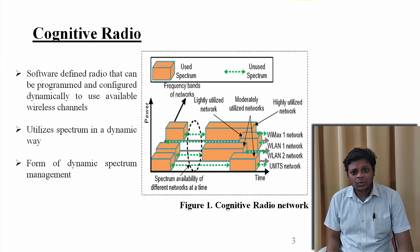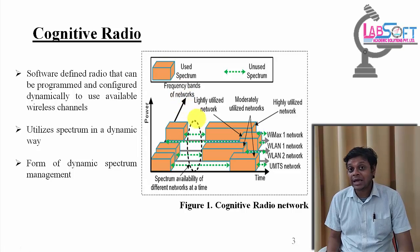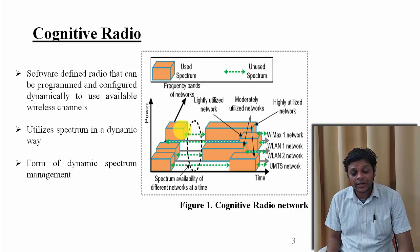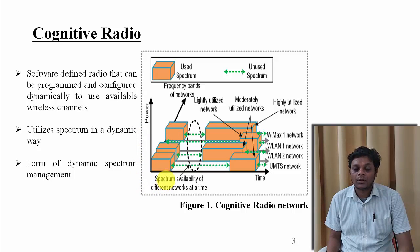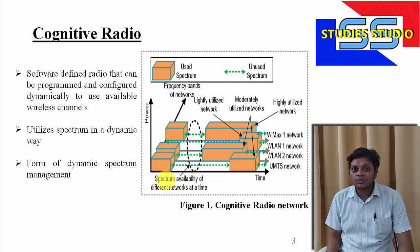Cognitive radio — you may feel it is new, but actually we have been using this for quite some time. This is dynamic spectrum access. We are accessing the channels dynamically. So it's a software defined radio that can be configured and reconfigured to use the available channels. It utilizes the spectrum in a dynamic way, so it's a dynamic spectrum management technique.